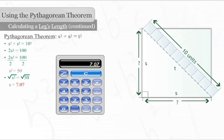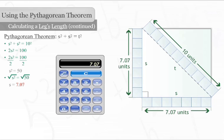The length of the legs of the right triangle, which is also the same as the sides of the square, is seven and seven hundredths.